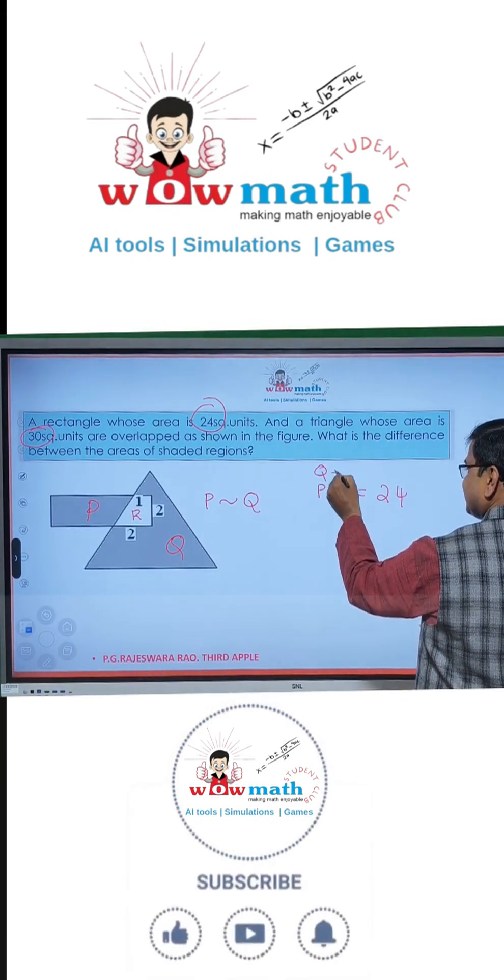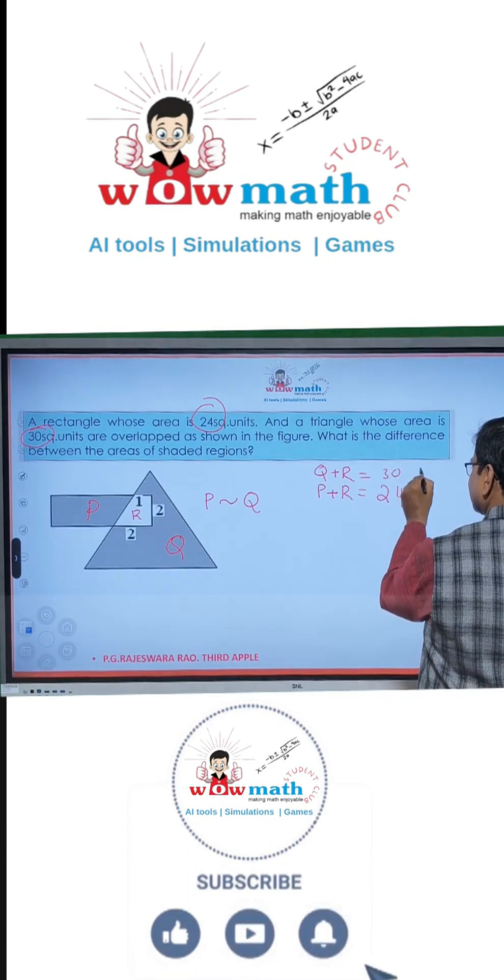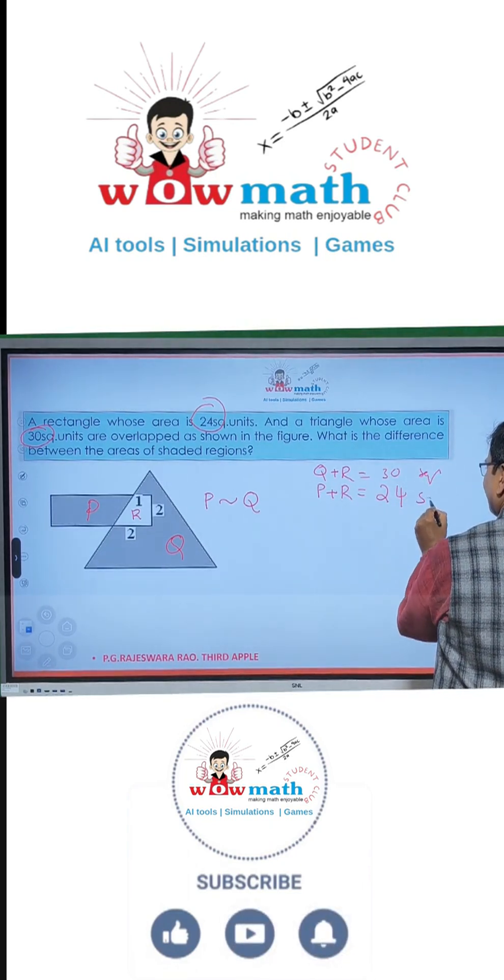What is Q plus R? Yes. Triangle area, 30 square units. This is 24 square units.